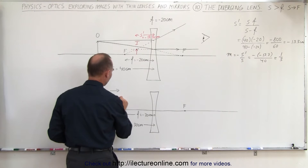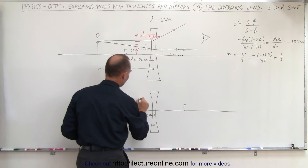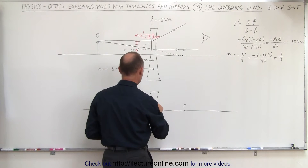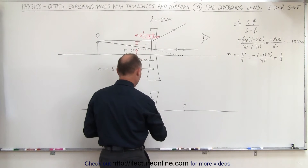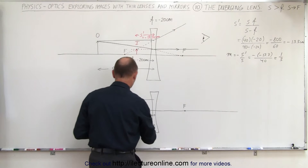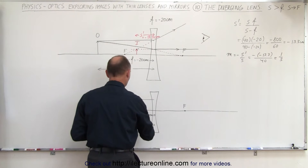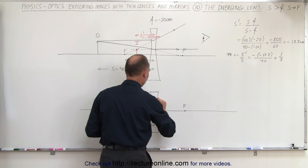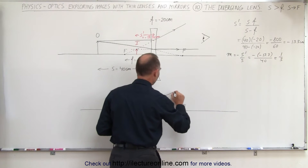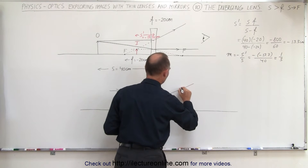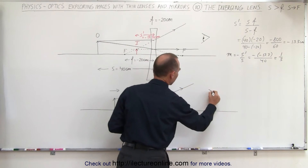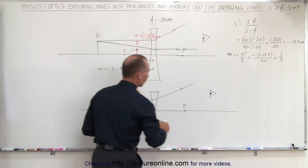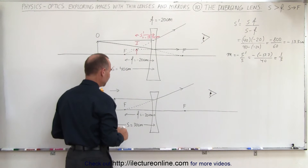We draw the first ray from the top of the object to the lens, and it will diverge as if it came from the focal point. The ray diverges out in this direction. The observer is on this side of the lens observing that ray.